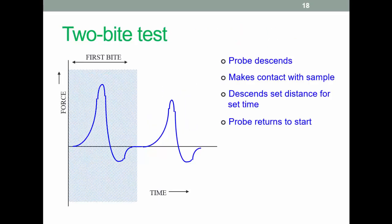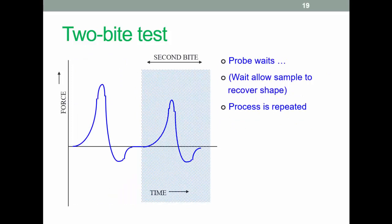The process in stages. The first bite: the probe descends, makes contact, etc. And the second bite, a very similar process. We notice the force applied is less this time because the food has been deformed by the first bite.